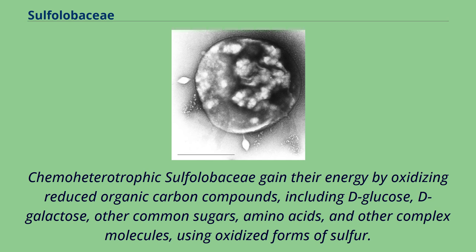Chemoheterotrophic Sulpholobaceae gain their energy by oxidizing reduced organic carbon compounds, including D-glucose, D-galactose, other common sugars, amino acids, and other complex molecules, using oxidized forms of sulfur.